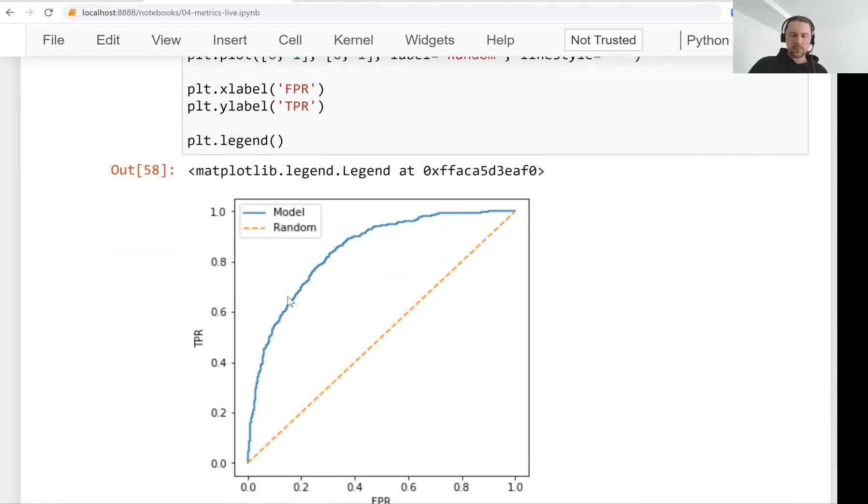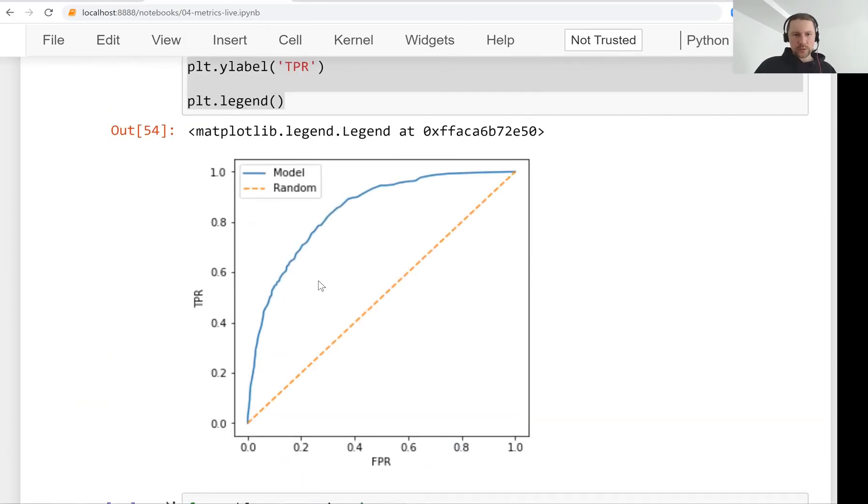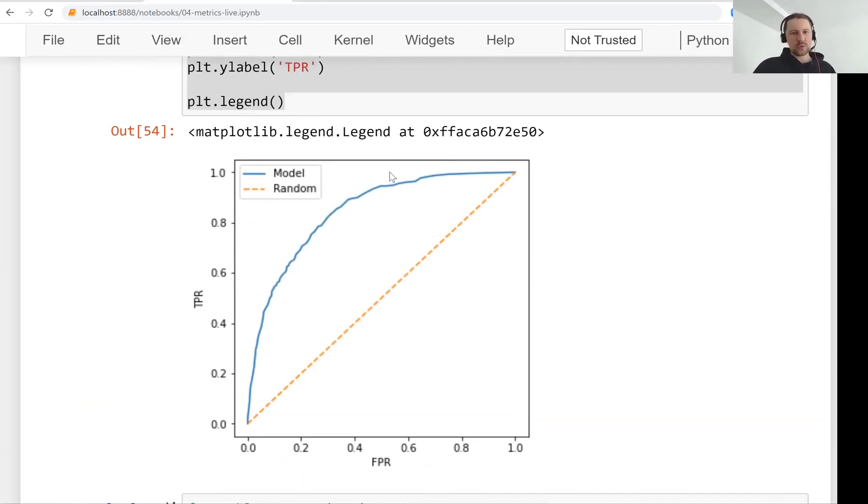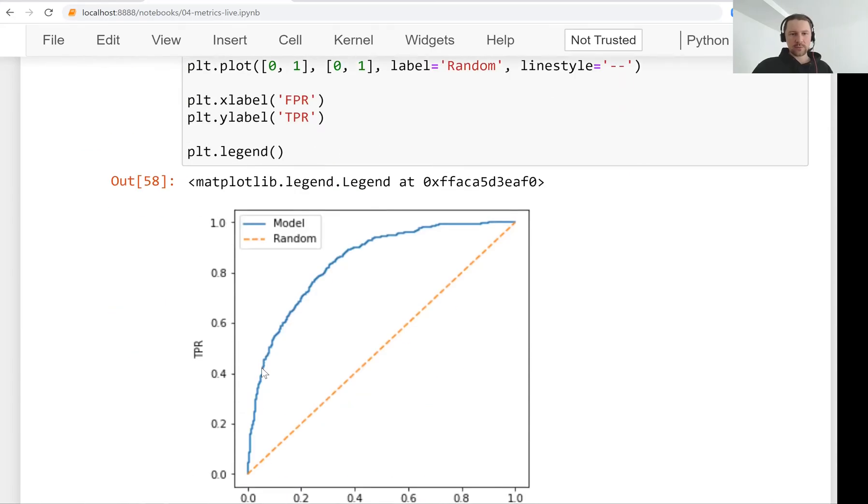So it's a little bit more bumpy. It's less smooth than this one, simply because here we just used 101 thresholds. And here, I think for every data point it tries to do this. So basically this one from scikit-learn is more accurate because it evaluates on more thresholds.